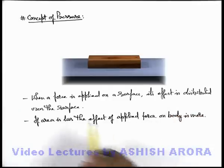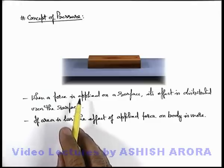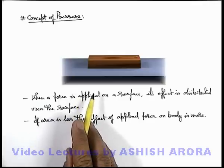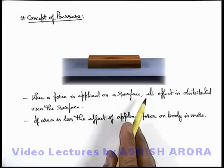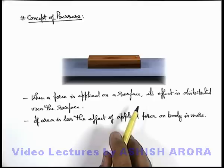In the first case, the surface area in contact with the wood is due to the flat head of the nail. As the area is large, the effect of the applied force on the surface of wood is less because it is distributed. In the second case, when the pointed tip was in contact with the wood, the area of the pointed tip is very small — that's why the effect of force is quite large and it was able to penetrate the wood.